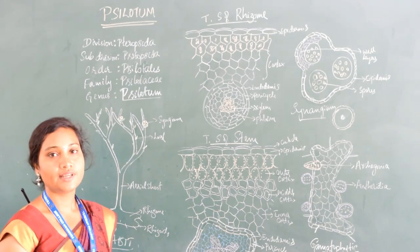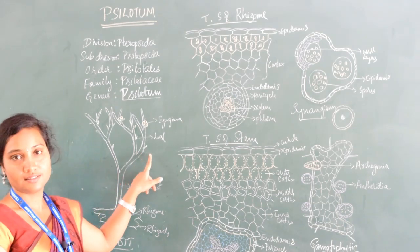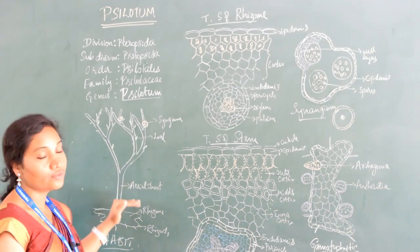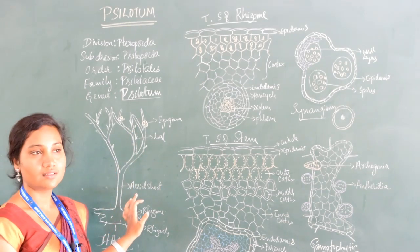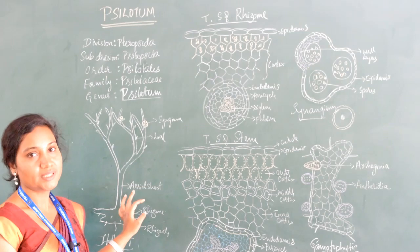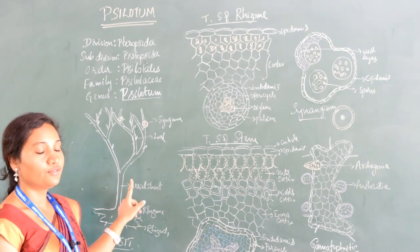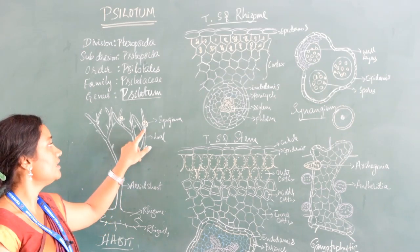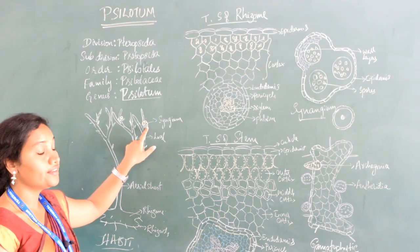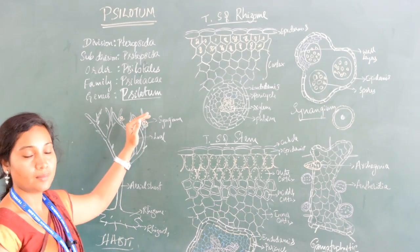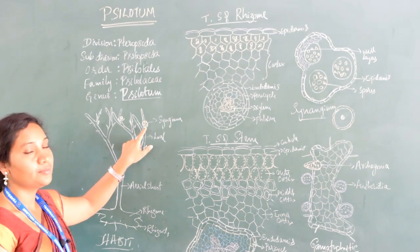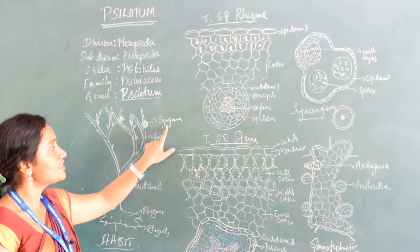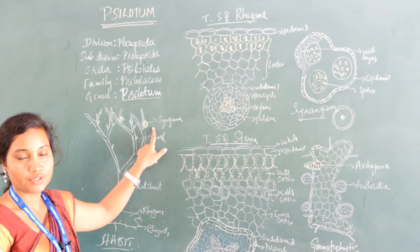On the aerial part, we also have scaly leaves. There are two types: sterile leaves, which are present all over the plant body and are green in color but do not perform photosynthesis; and fertile scaly leaves, present towards the apical part, which bear a tri-lobed spore-bearing structure called synangium, the reproductive structure.